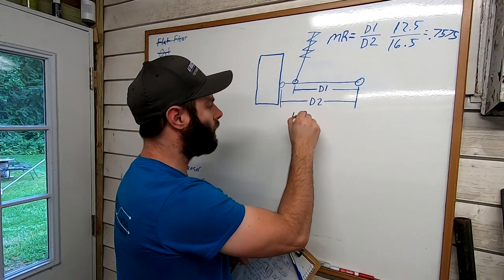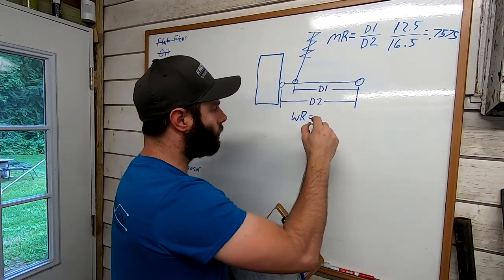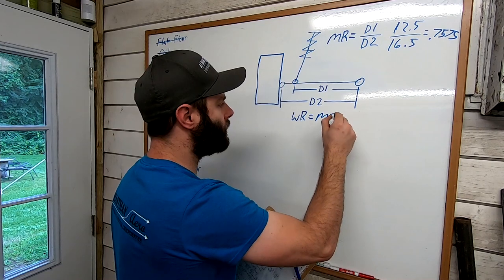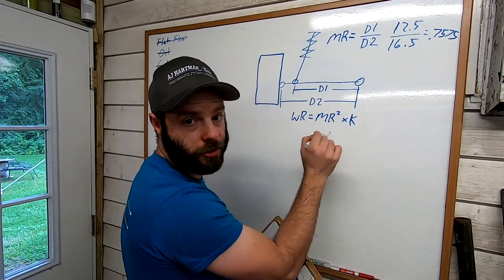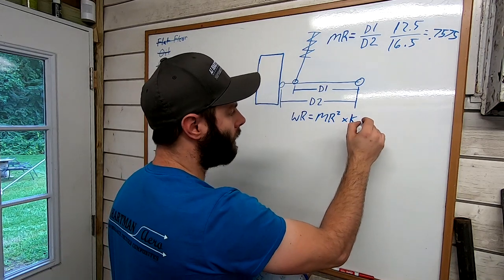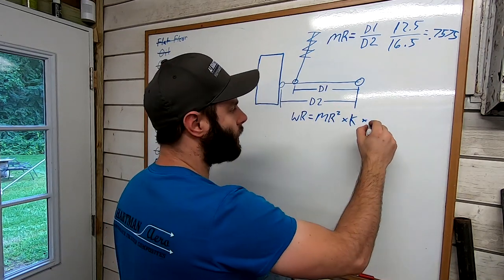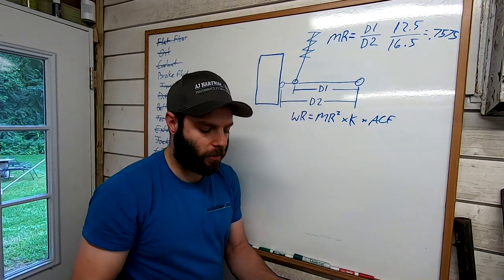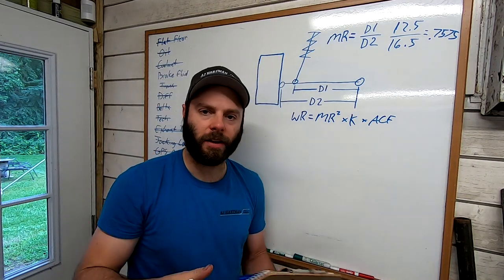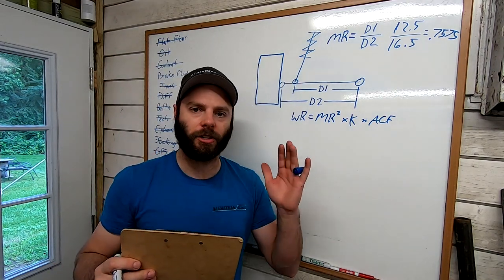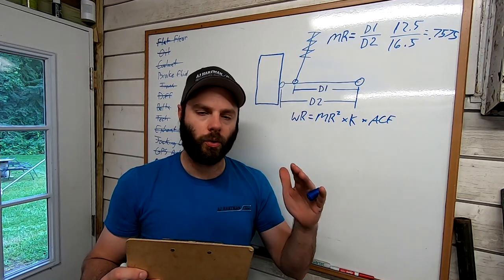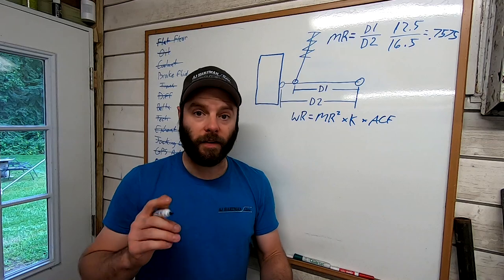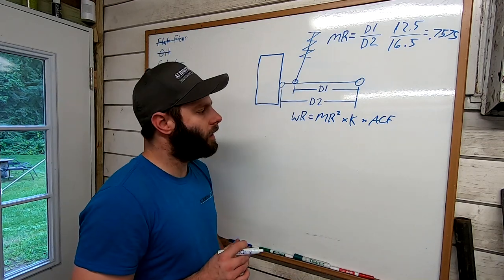So the equation for that is the wheel rate equals your motion ratio squared times K, which is your spring rate, times your angle correction factor. Now the angle correction factor I mentioned in other videos, anytime a shock and spring is leaned in you lose a little bit of effectiveness.